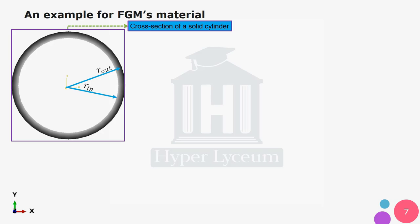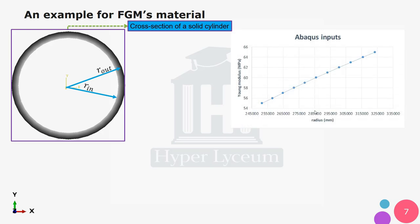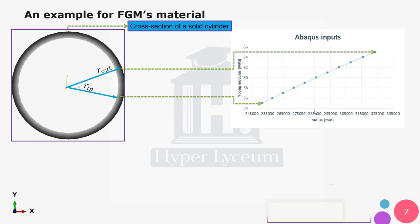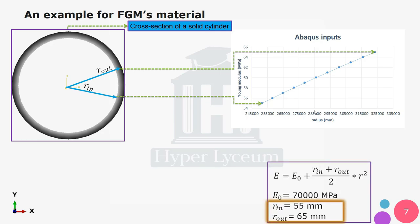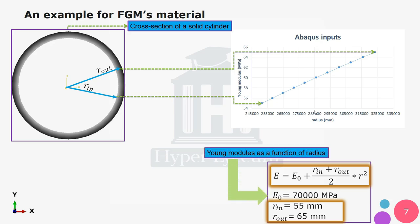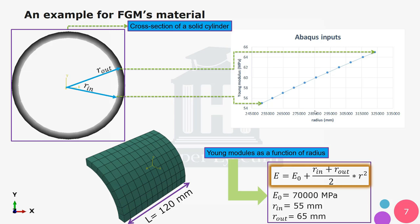Here you can see the cross section of a cylinder defined by solid elements and the Young's modulus in MPa as a function of radius. The inner radius is 55 millimeters and the outer radius is 65 millimeters. The Young's modulus is given by an equation as a function of radius, where a₀ amounts to 70,000 MPa.